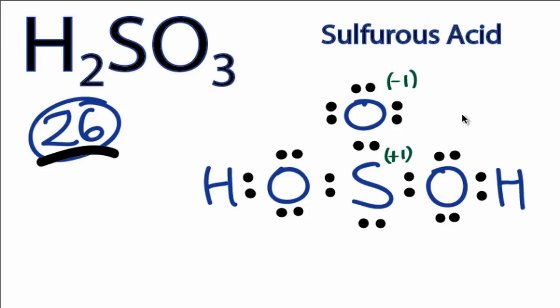And to do that, we can move this pair of valence electrons between the oxygen and the sulfur to form a double bond. By doing so, we're still only using 26 valence electrons, but now the formal charges on all of the atoms are 0, and that makes for a much more stable Lewis structure for H2SO3.